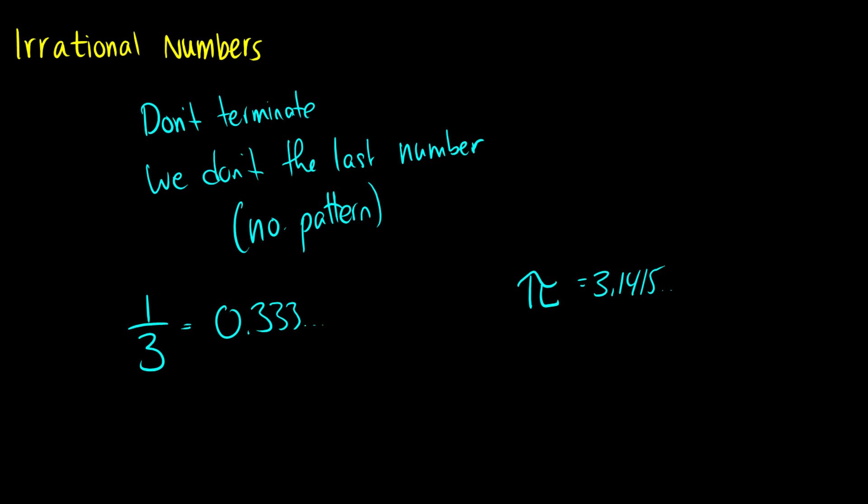We don't know how far it goes. So this number is going to be irrational, while the number one third, because we know the pattern, we know what it should end as, is going to be rational.